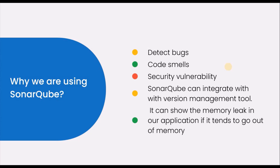SonarQube also highlights complexity areas of the code. For example, if a particular method has lots of lines of code, or a class has too many lines, it looks very complex. SonarQube suggests reducing those complexities — maybe rewriting methods, reducing the number of parameters, and reducing lines of code so the code is easy and maintainable.